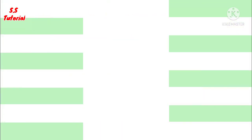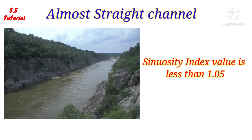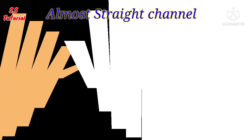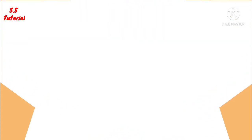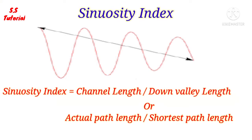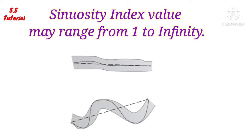Let's know them one by one. Almost straight channel: when the value of the sinuosity index is less than 1.05, that channel is called an almost straight channel. The sinuosity index is an index or formula from which we can measure the sinuosity of any curve by dividing its actual path length by the shortest path length of that curve. Sinuosity index equals channel length divided by down-valley length. The value of the sinuosity index may vary from 1 to infinity. Winding channel: when the value of the sinuosity index is less than 1.25, that channel is known as a winding channel.